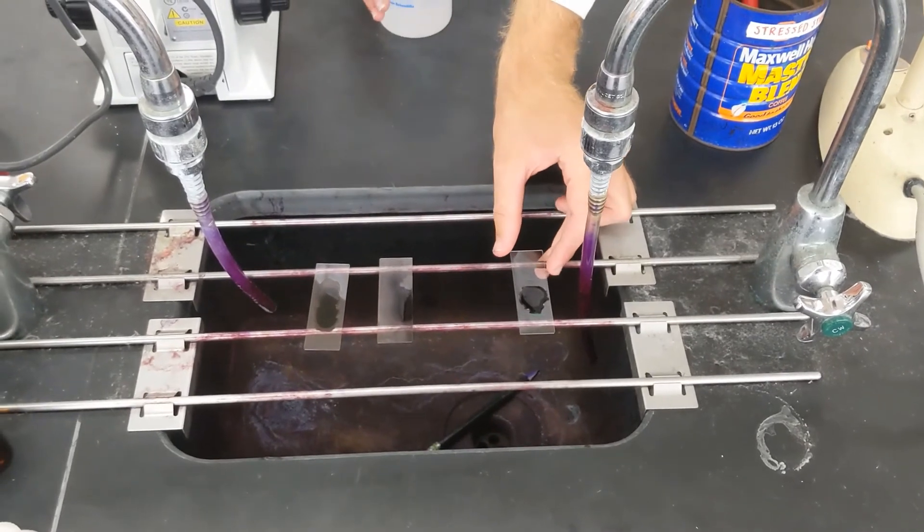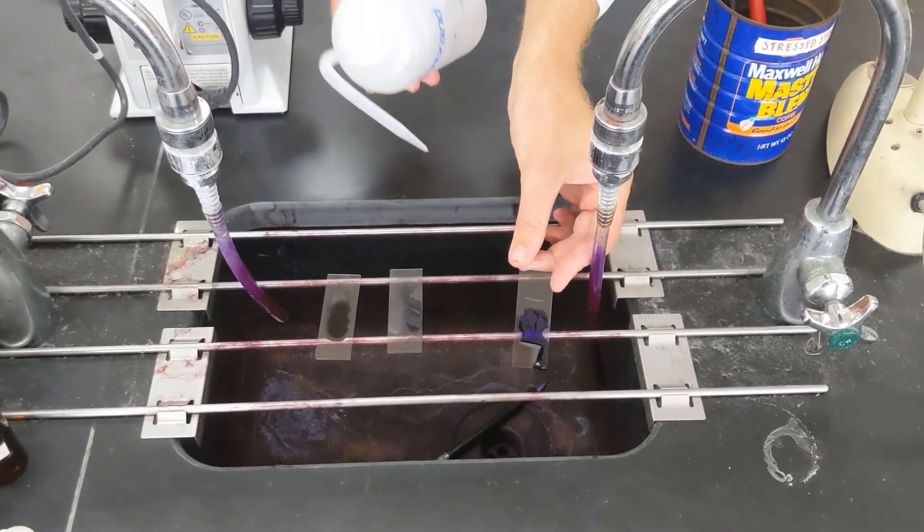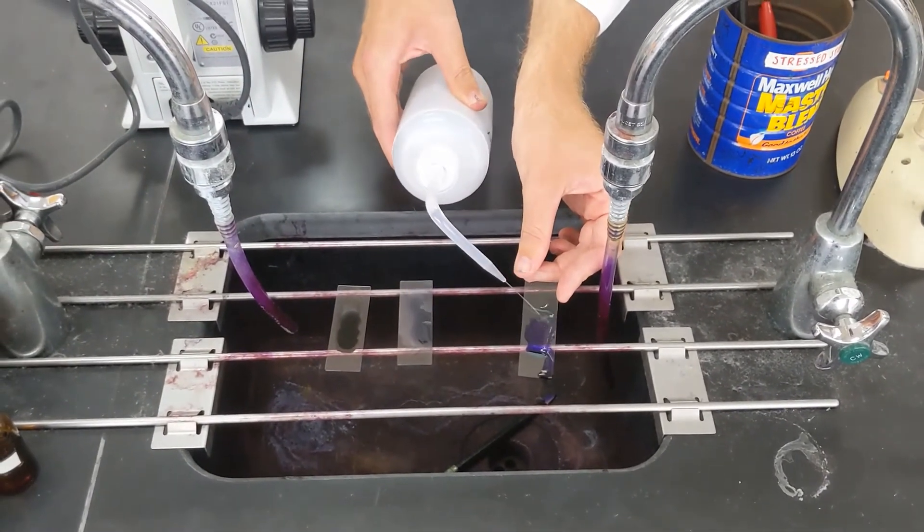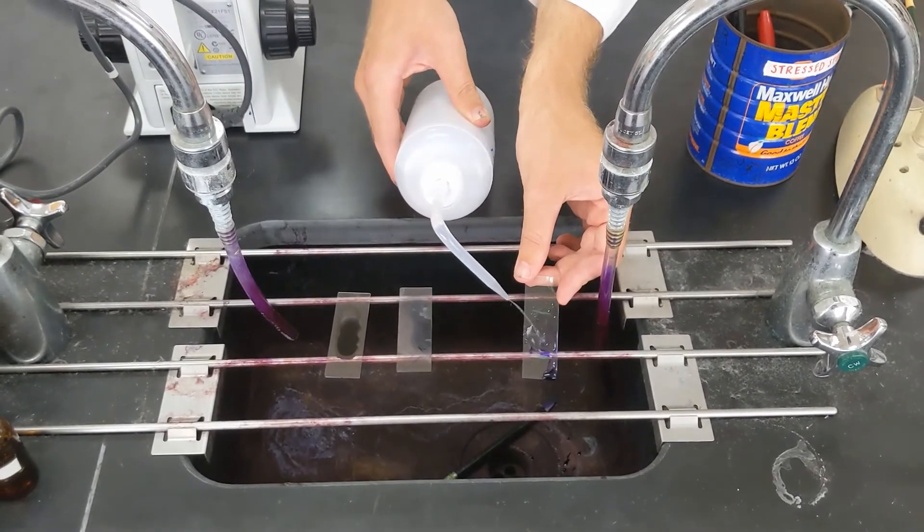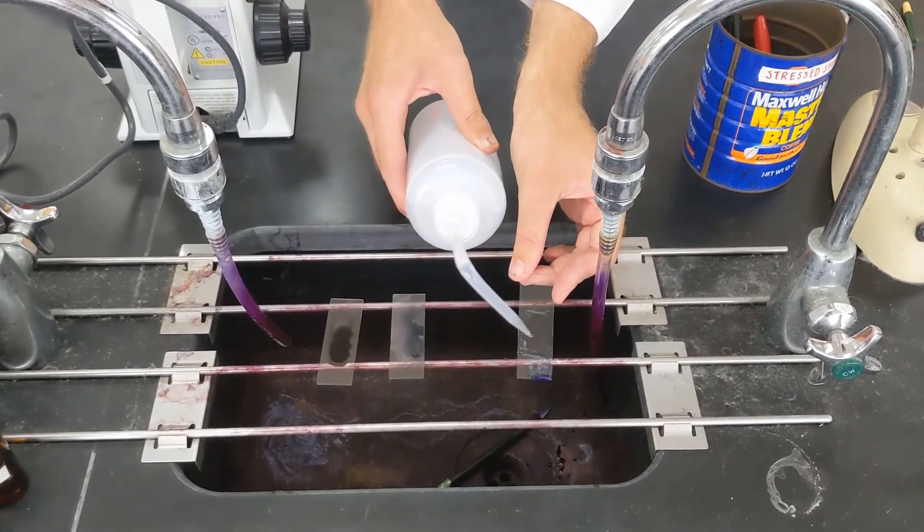So then after you let your stain sit for 30 seconds to a minute, take it and just wash the slide gently off with water. Not trying to blast it off or anything, just do it gently.